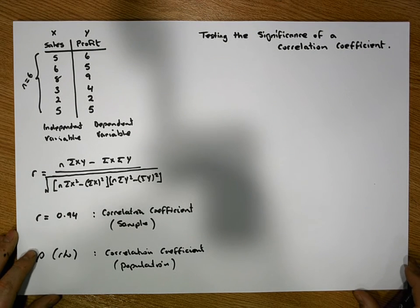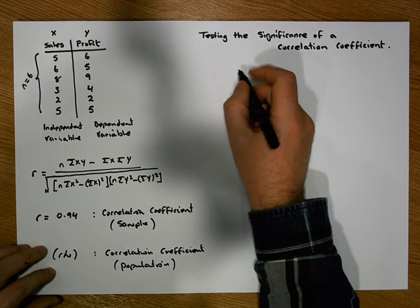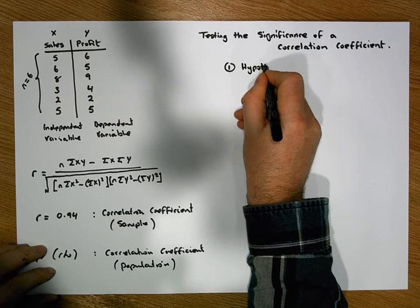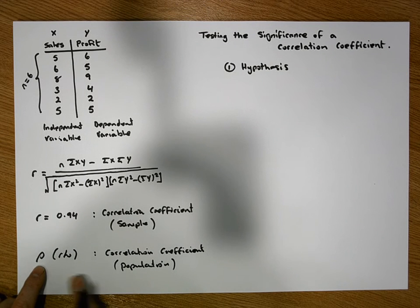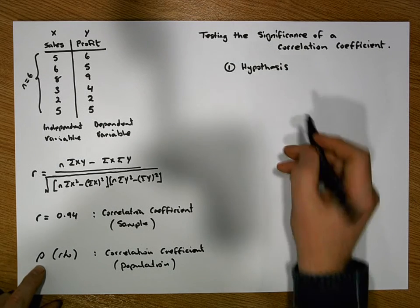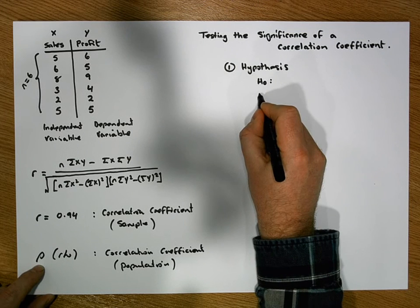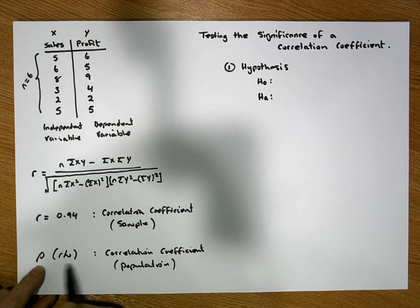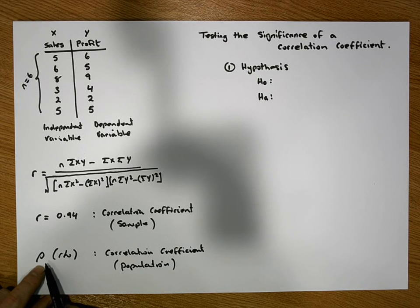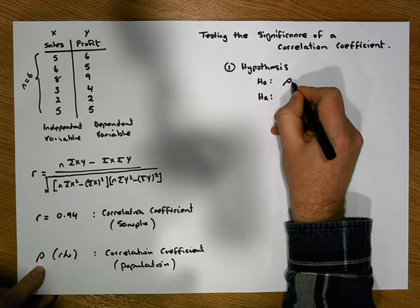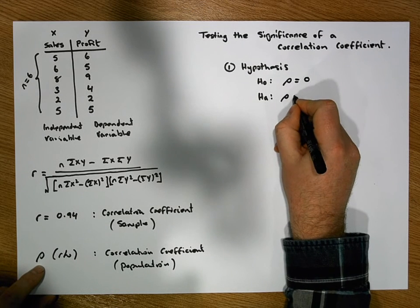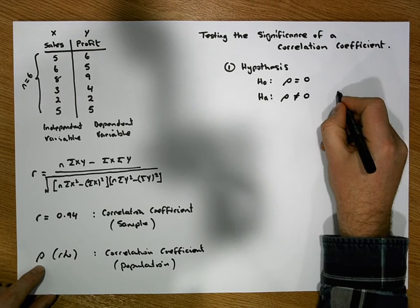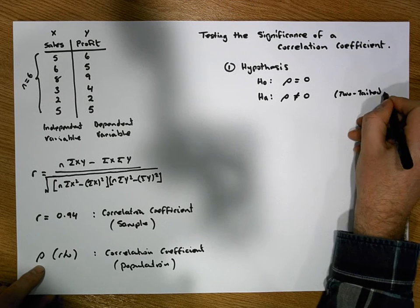Like all hypothesis tests, it's a five-step process. The first step is to define our hypothesis, which is a statement about the population parameter — specifically, about the value we think the population correlation coefficient has. It has a null position H0 and an alternative position Ha. The null position is that the population correlation coefficient rho equals zero. The alternative position is that rho is not equal to zero. This is a two-tailed test.